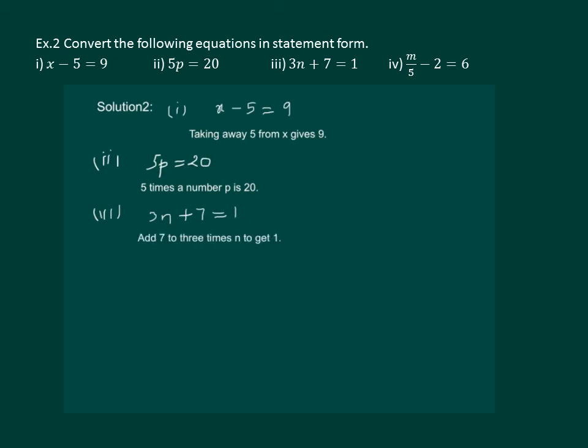Now, let us proceed to the fourth part. It is m by 5 minus 2 is equal to 6. In terms of statement, this can be written as: we get 6